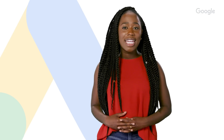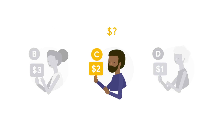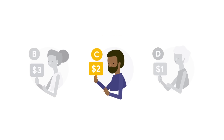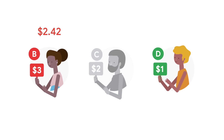Now that you understand how the ads are ranked, how much will these advertisers actually pay for a click? They'll pay the minimum amount necessary to maintain their positions in the search results. Advertiser C will only pay the amount required to maintain their first position — even though they're willing to pay $2, they might only pay $1.73. Similarly, Advertiser B won't necessarily pay $3, but just enough to outrank Advertiser D in the auction.